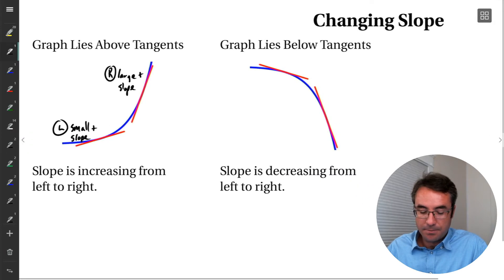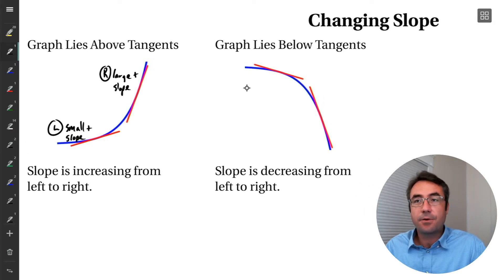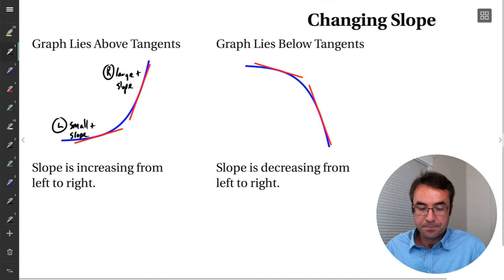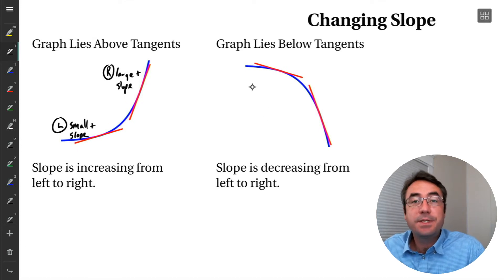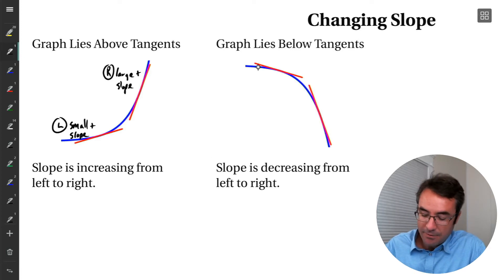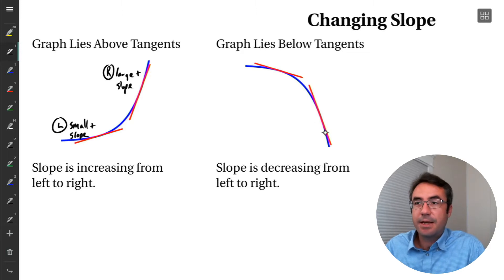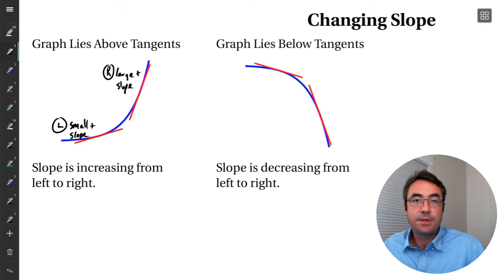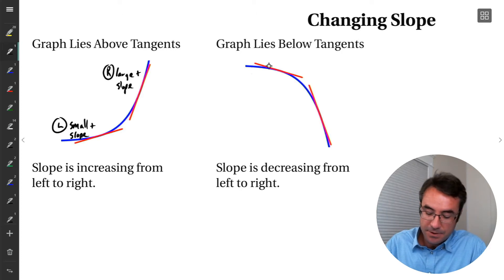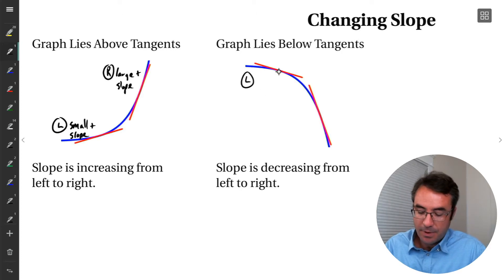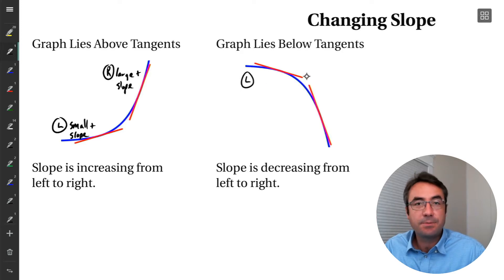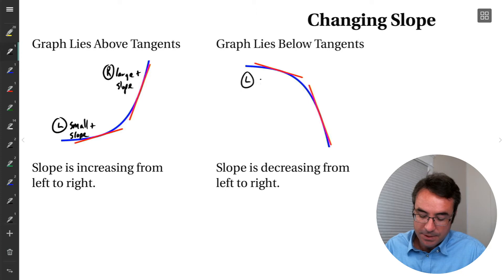Now something similar is happening in this other graph, but what's happening here is the slope is actually decreasing. As we read this graph from left to right, we have our curve with a few different tangent lines graphed, and the slope of those tangent lines is decreasing as we read from left to right. So the leftmost tangent line is pointing down, but it's kind of flat — it's like a small negative slope.